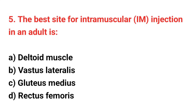Question number 5: The best site for intramuscular injection in an adult is? The right answer is option C: Gluteus medius.